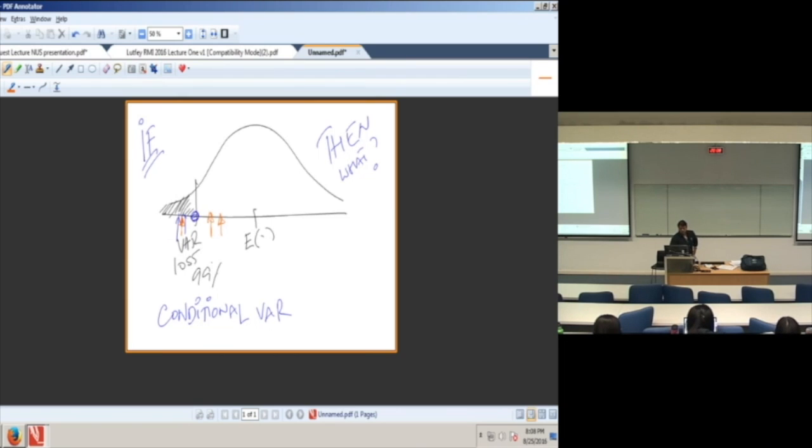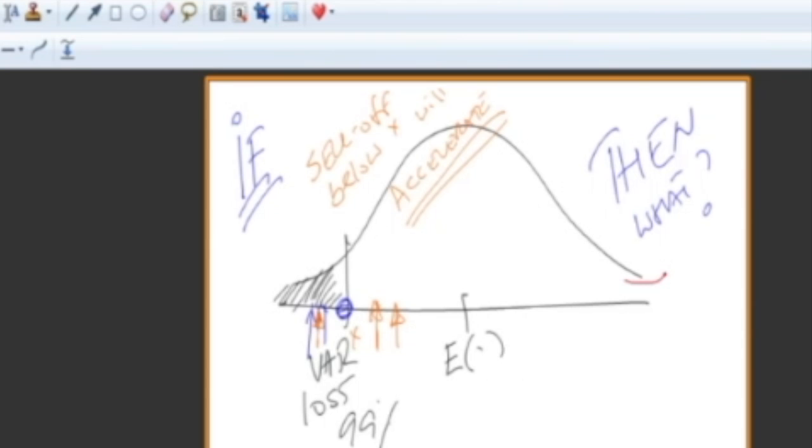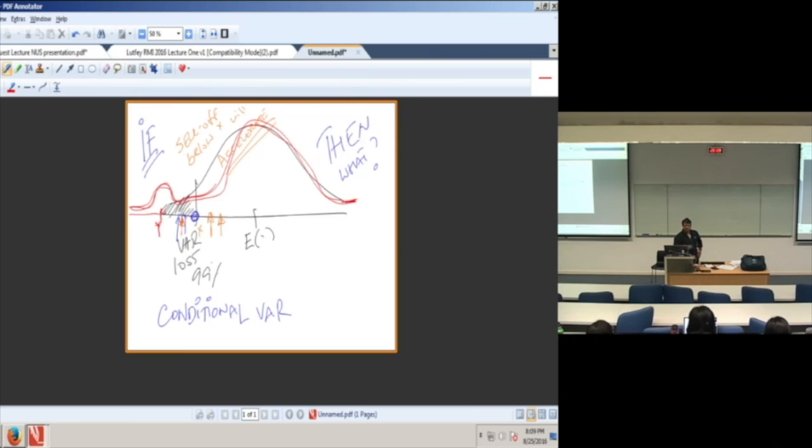So we know that a sell-off below X will likely accelerate and the distribution could look something like this. If market goes below X, then it's not going to stop near X. It's going to continue going down in an accelerated way with the expected value Y.